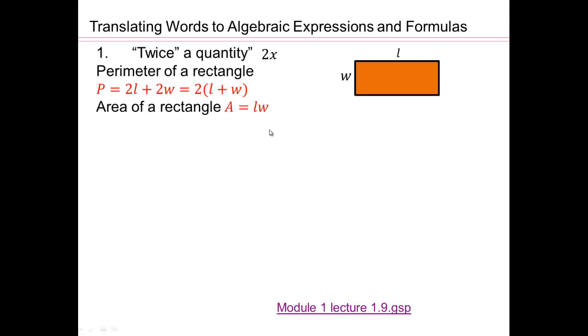All right. So area of a rectangle is then the length times width. This is a degree 2 polynomial. So area of a rectangle is length times width, whereas perimeter of the rectangle is 2 times length plus 2 times width, or 2 times length plus width.